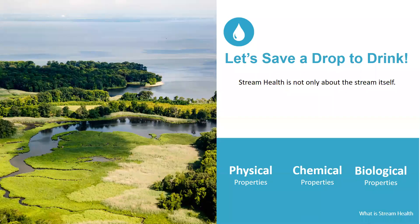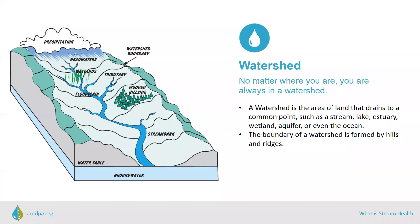So let's save a drop to drink — this brings us to the concept of stream health. There are three main aspects of stream health: physical properties, chemical properties, and biological properties, which we'll dive into in a minute. But we can't talk about just the stream itself; we have to zoom out and look at the watershed as a whole, because what we do on the land directly affects stream health.